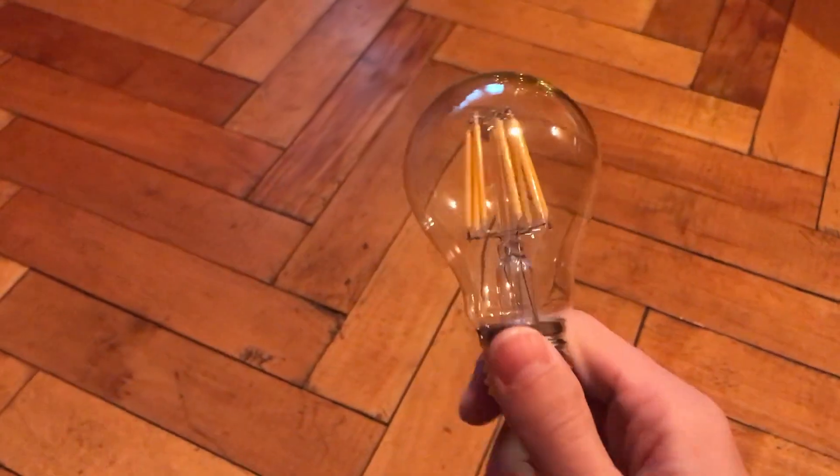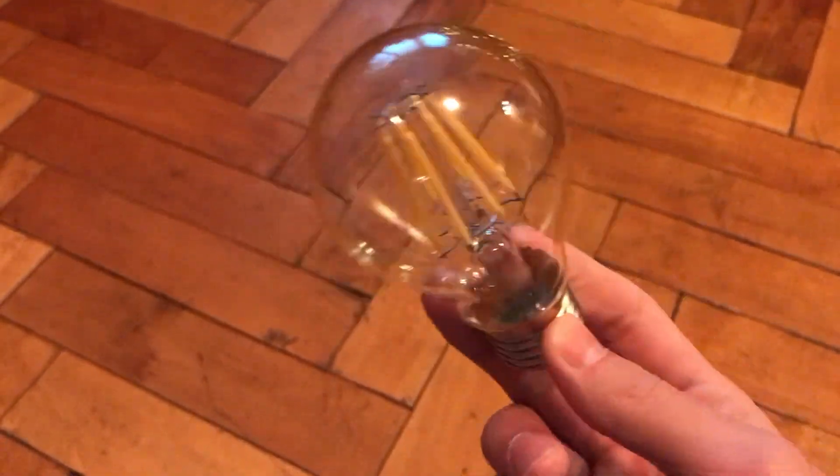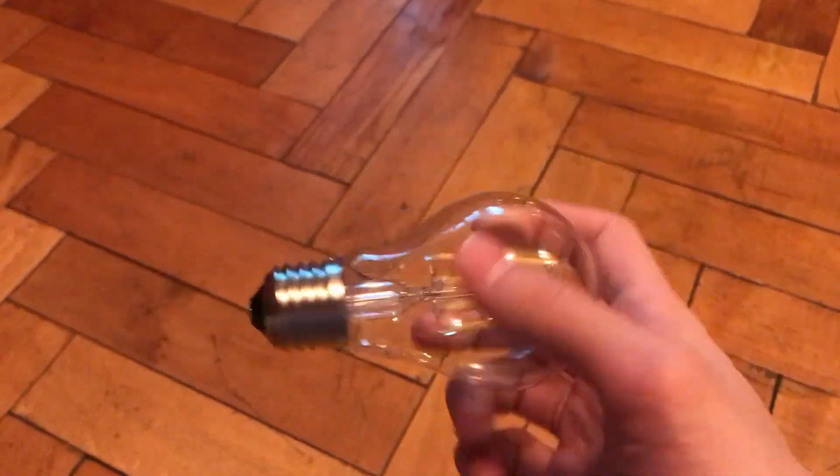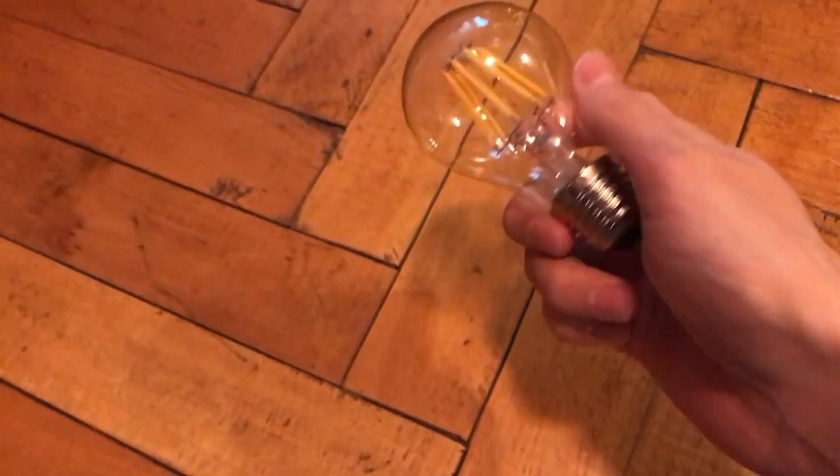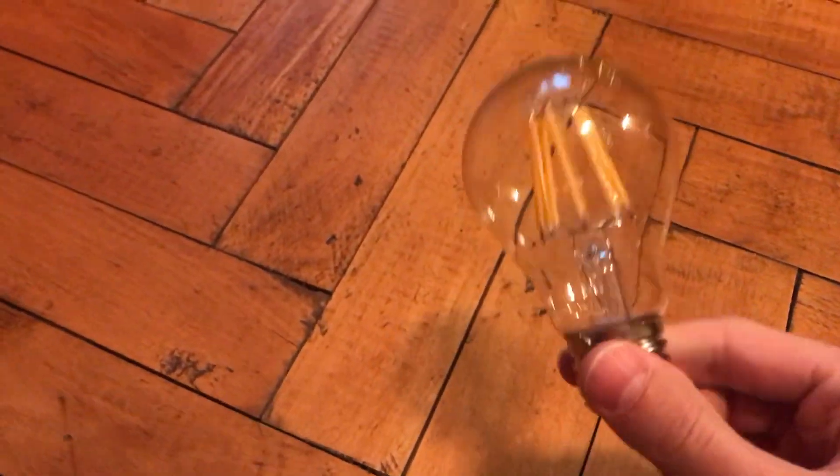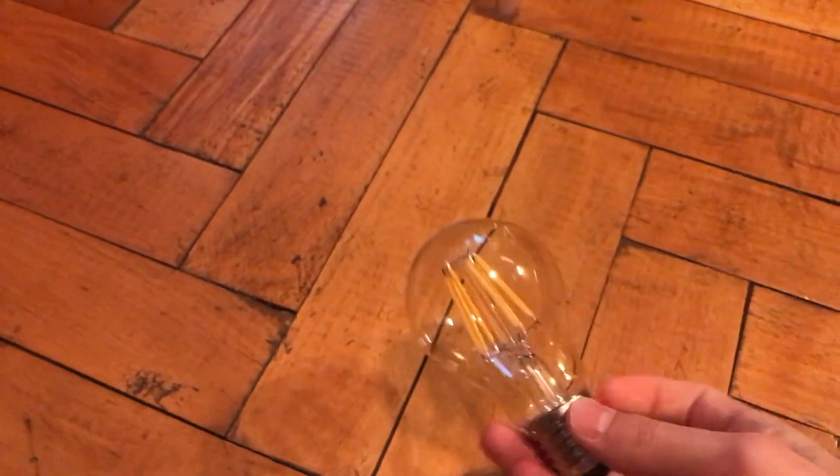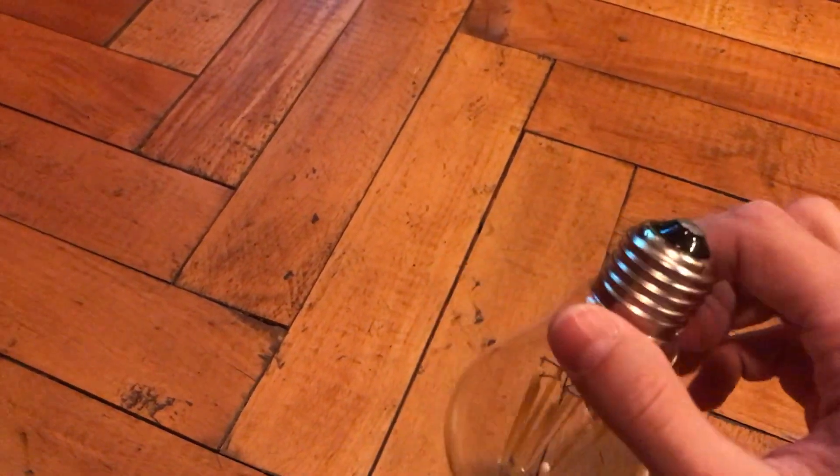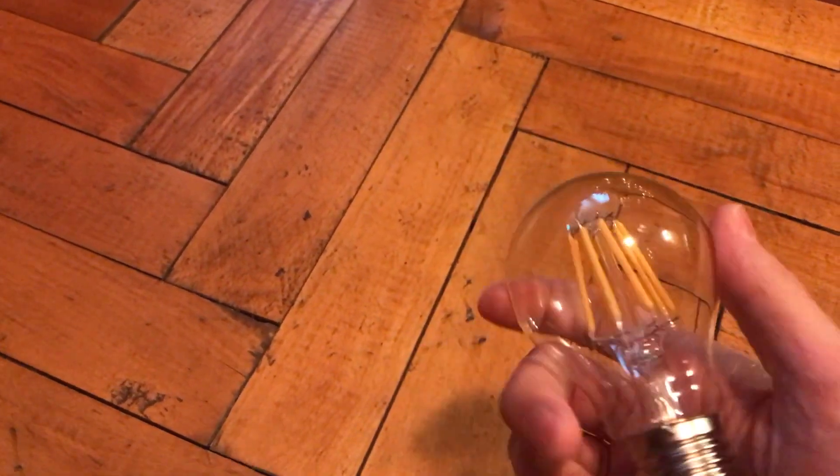So today we're going to take a look at this filament light bulb. This has failed and I'll show you what exactly happened shortly. First of all I want to see if they pulled a vacuum, and this is glass. This is exactly the same envelope as a normal tungsten filament light bulb.